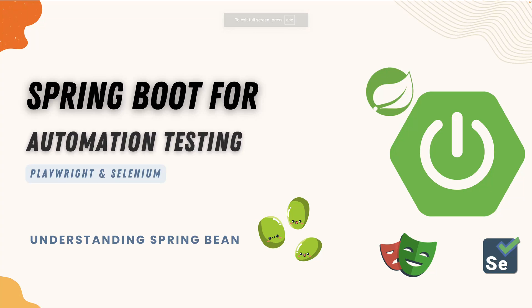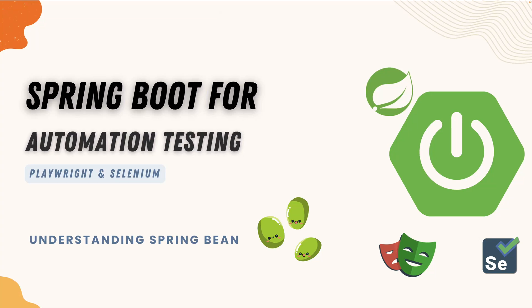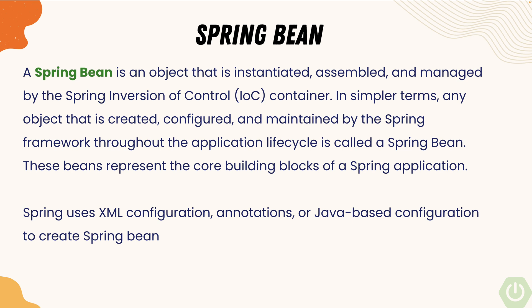In this lecture we will understand what a Spring Bean is. A Spring Bean is an object that is instantiated, assembled, and managed by Spring's Inversion of Control container. Spring Bean is more like an object of a class, but because this is done with Spring's IoC, Spring takes care of instantiation, assembling, and managing of the object. In simpler terms, any object that is created, configured, and maintained by the Spring framework throughout the application lifecycle is called a Spring Bean.